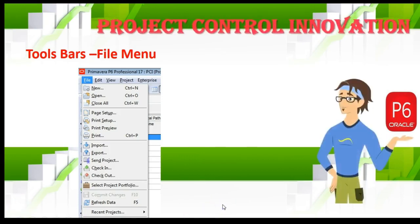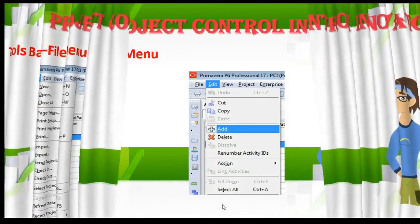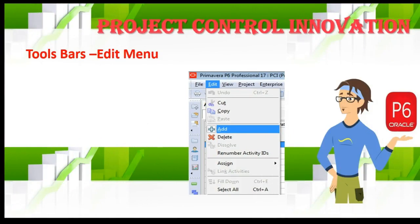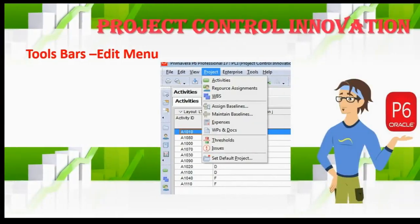The second menu is Edit — by Edit you can cut, paste, add, and delete, and we'll explain that when we go to the live software. After that we have the Project menu, and under Project you'll find all the tools to help you manage the project: adding activities, adding resources, assigning baselines, adding expenses, documents, thresholds, and issues.